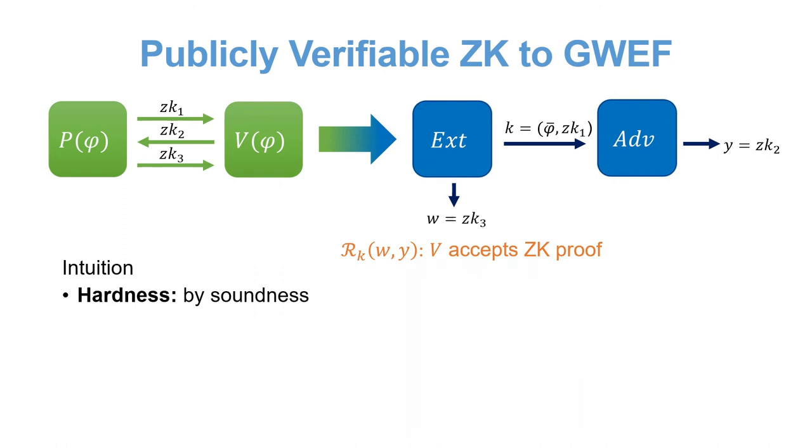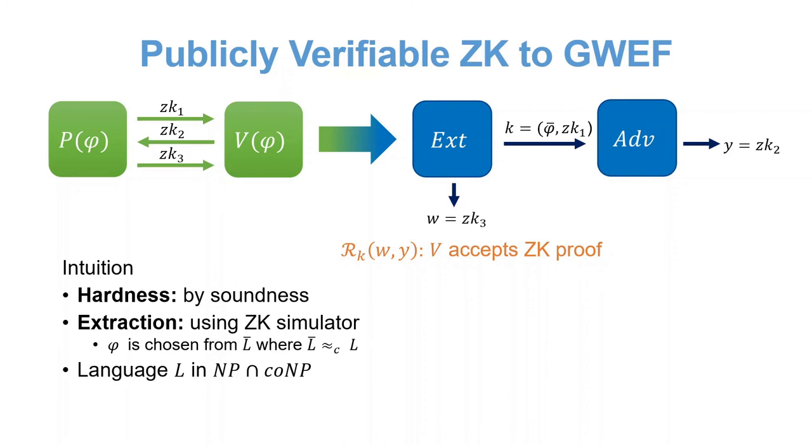Intuitively, hardness should follow from the soundness of the protocol. Finding a witness requires finding an accepting proof, and this would be hard for false statements. Extraction will come from the zero-knowledge property. If we choose phi from a language where false instances are indistinguishable from true instances, then the simulator must output accepting proof for both. One thing we didn't mention is that we require that the key's validity can be tested in NP. In our case, being valid means that phi is a no instance. So we want to choose phi from a language in NP co-NP.